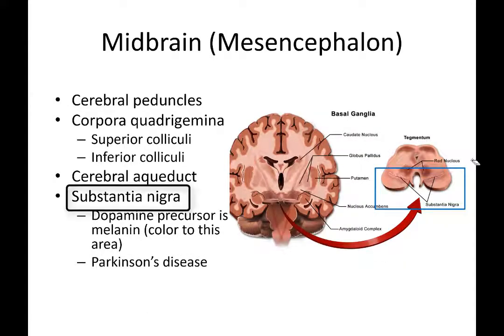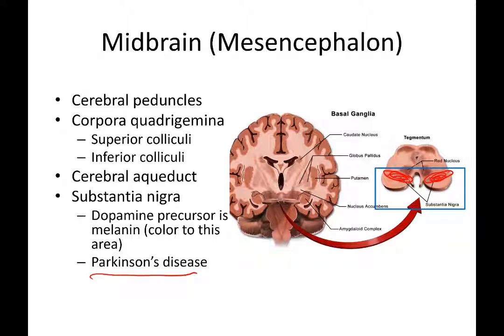The substantia nigra is located in the midbrain. It is where dopamine is created — melanin is a component utilized to make dopamine, so this area is often quite pigmented. People with Parkinson's disease have pathology in the substantia nigra and show a markedly reduced substantia nigra due to insufficient release of dopamine.